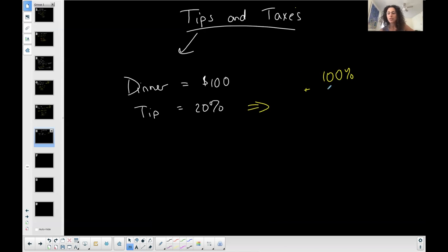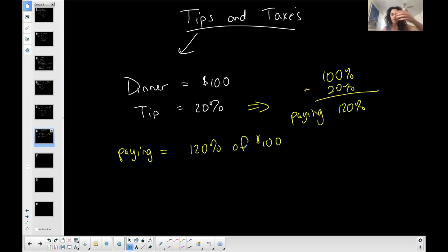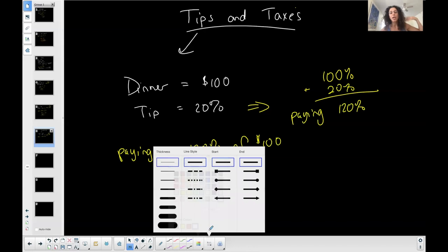But I'm adding a tip to it. So I'm adding 20%. So I'm actually paying 120% of this dinner, 120%. So I'm paying 120% of $100. Now it's greater than 100 because I'm adding on, right? It's tipping. It's on top of the original. I'm not discounting. I'm not taking away. I'm adding on to.